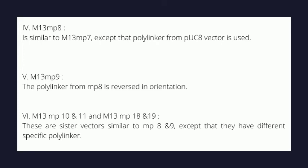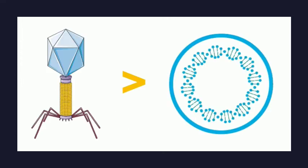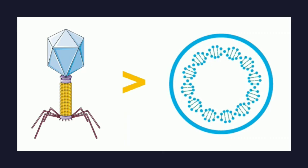That's all about the E. coli phage vectors in this video. Clearly, phage vectors are more powerful than plasmid vectors, as in the former the genome packaged in the phage head is injected physically into the host cell, which is obviously more fruitful. Please feel free to post your queries, suggestions, and feedback. We shall be back soon with the wonderful topic of artificial chromosomes. Bye till then!